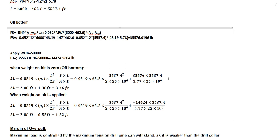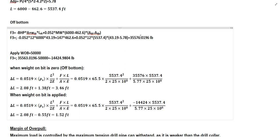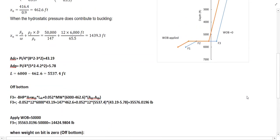We have the two scenarios: when it's off bottom (WOB = 0) and when WOB is 50,000. Row S is 65.5, the length of the drill pipe is 5,537, E is provided as 25 multiplied by 10 to the power of 6. When off bottom, F is 35,576 and the area is 5.77. For the second scenario when WOB is applied, F is negative 14,424 and everything else remains the same, allowing us to find the elongation at both scenarios.